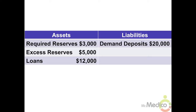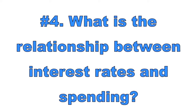This bank can hold the other seventeen thousand dollars as excess reserves, which is important because a bank creates money when it lends from excess reserves. This bank already lent out twelve thousand; presently it can legally lend an additional five thousand dollars from excess reserves. If a bank cannot meet its reserve requirement, it can borrow from another bank at the federal funds interest rate, or from the Federal Reserve at the discount rate.